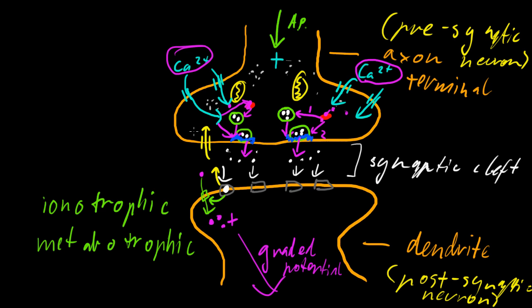But this process here requires ATP. So that's energy for the cell, for the neuron, for the presynaptic neuron. So it'll spend ATP from the mitochondria to take back up that neurotransmitter. So that's called reuptake. That's one way.